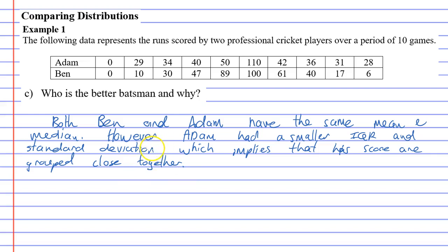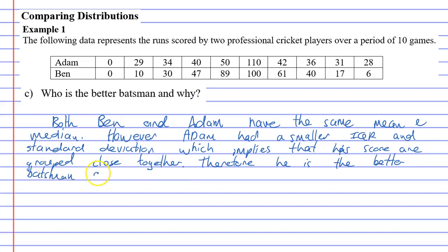What it means is he's a more consistent batsman. Most of his scores are around about the same mark — most of his scores are around the late 20s to 30s, early 40s. So, therefore, he is the better batsman, since his scores are more consistent.